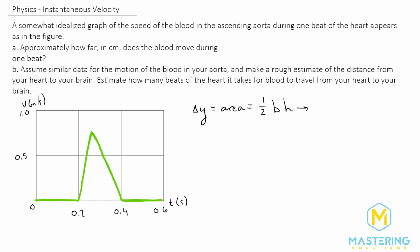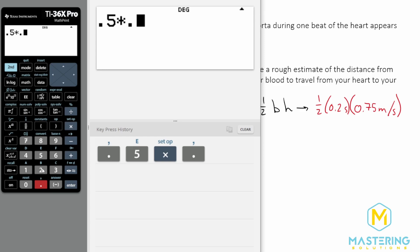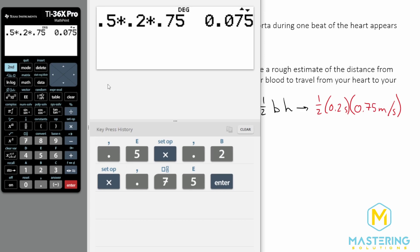So if we plug in the numbers for that, we have the base is 0.2 seconds, so one half times 0.2 seconds, and then the height is about 0.75, it's about halfway between 0.5 and 1. So 0.75 meters per second. So we have 0.5 times 0.2 times 0.75, and that gives us 0.075.